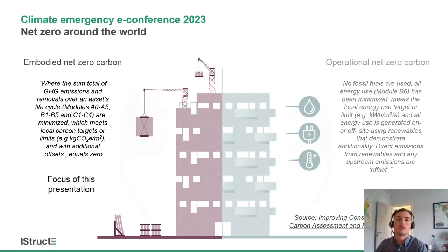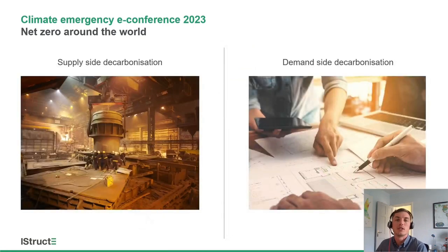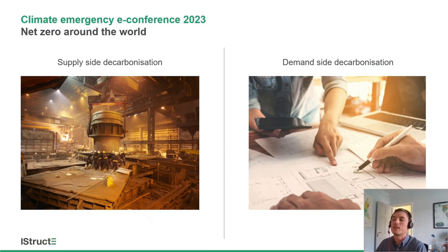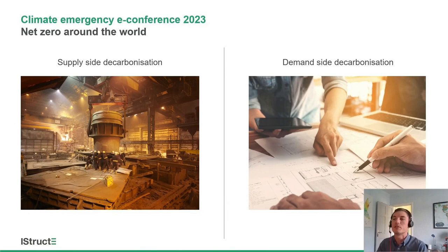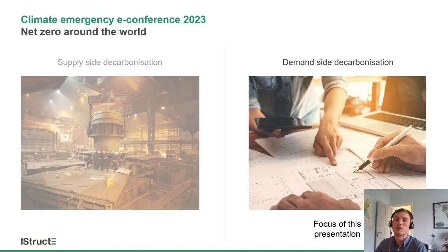For this presentation, we're going to focus in even more narrowly on the embodied net zero carbon bit and the policies and legislation around that. In terms of embodied carbon in construction, you've got the supply side decarbonisation and then the demand side decarbonisation. Supply side I'm calling the emissions from manufacturing and producing materials — the decarbonisation of industry. Demand side is framed as the impact we have as clients, designers, and specifiers, changing the demand for those materials whilst those materials are also on their own decarbonisation pathway.